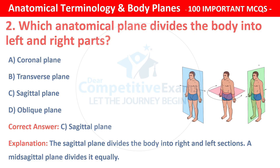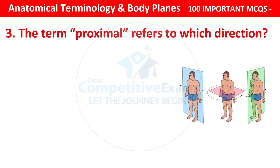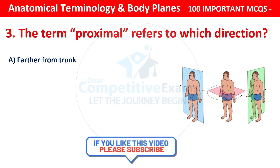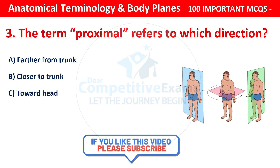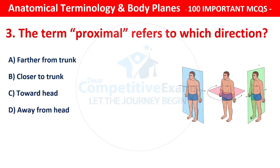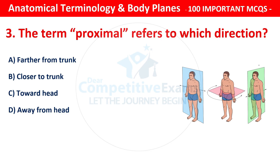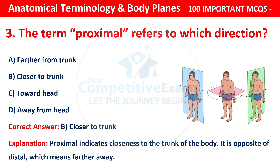Question number 3: The term proximal refers to which direction? Options are: farther from trunk, closer to the trunk, toward head, or away from head. The correct answer is B — closer to trunk. Proximal indicates closeness to the trunk of the body. It is opposite of distal, which means further away.